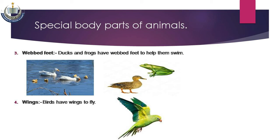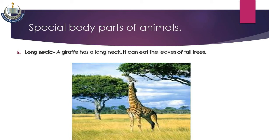Number three: Webbed feet — ducks اور frogs کے webbed feet ہوتے ہیں جن کی مدد سے وہ تیرتے ہیں۔ Number four: Long neck — جراف کی long neck ہوتی ہے جو انہیں اونچے trees کے leaves کھانے میں مدد دیتی ہے۔ Number five: Wings — birds کے wings ہوتے ہیں جن کی مدد سے یہ اڑتے ہیں، اور birds کی beak یعنی چونچ انہیں insects، grain اور seeds وغیرہ پکڑنے اور کھانے میں مدد دیتی ہے۔